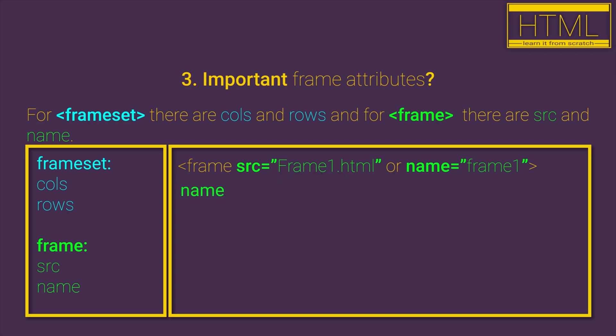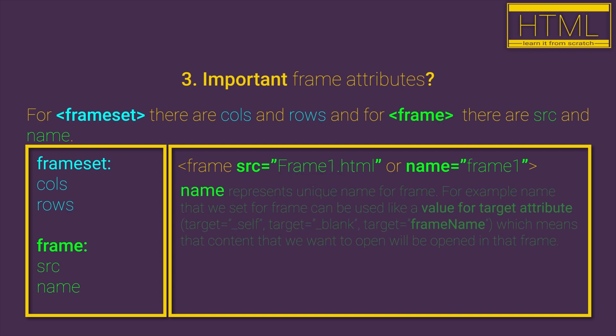The name HTML attribute represents a unique name for our frame. The name HTML attribute could be useful in cases where we want to point to a specific frame — we can simply reference the name defined for that frame.